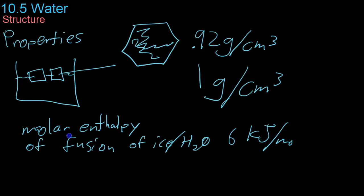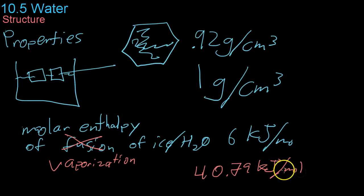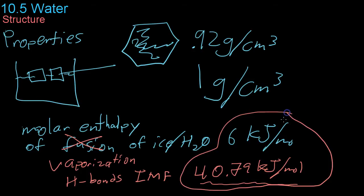The molar enthalpy of vaporization of water is about 40.79 kilojoules per mole. This, again, is relatively high because you have to break the strong hydrogen bonds, which are among the strongest intermolecular forces, in order to change a mole of water into a mole of water vapor. These two properties, the high molar enthalpies of fusion and vaporization, make water extremely useful for cooling because not a lot of water can do a lot of absorption of energy due to these molar enthalpies as well as the specific heat.